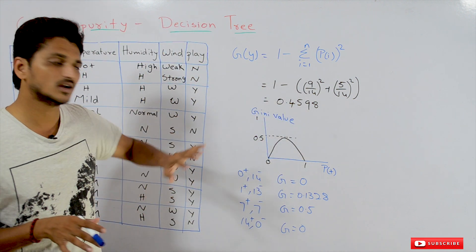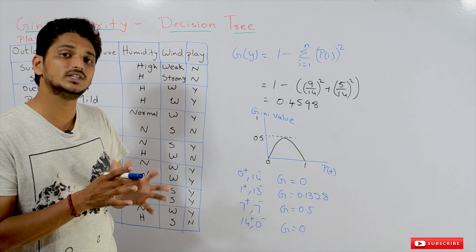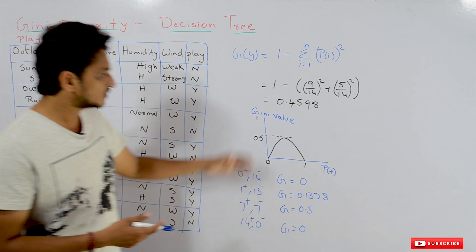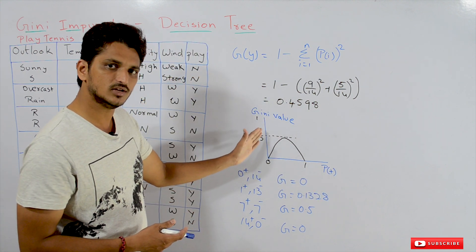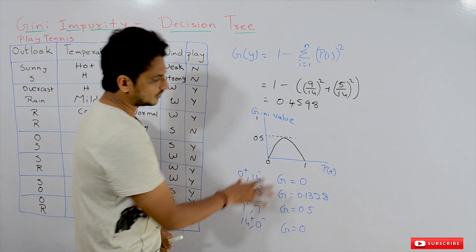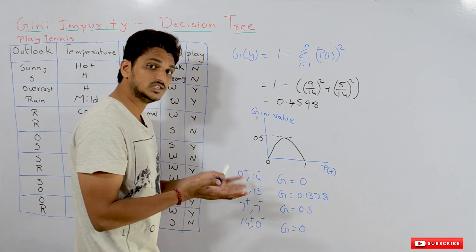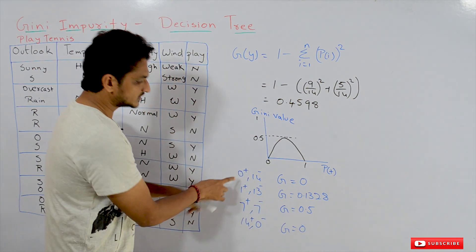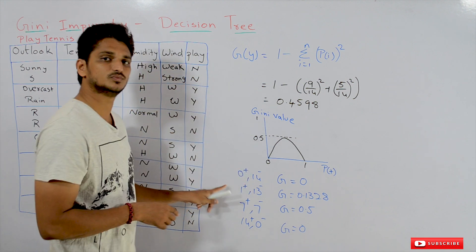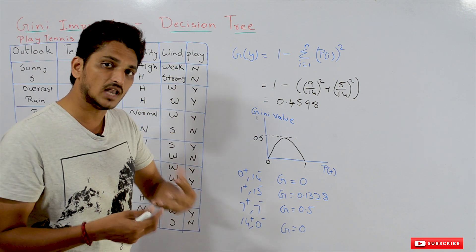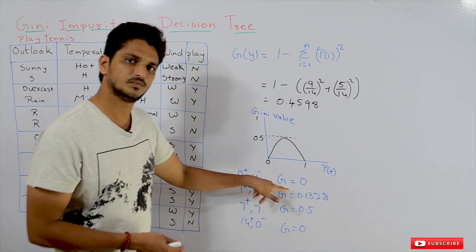Now let us understand how the Gini impurity value changes with the change in our example dataset. On the x-axis we are taking the probability of the positive class, and on the y-axis we are taking the Gini impurity value. The positive probability value is between 0 and 1. Suppose if you are having 0 positive values and 14 negative values — meaning all are negative — if you calculate the Gini impurity value, G equals 0.